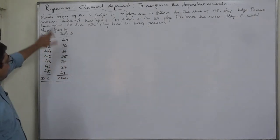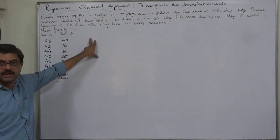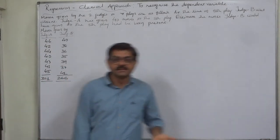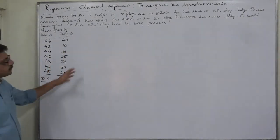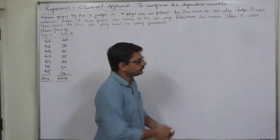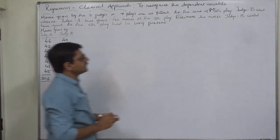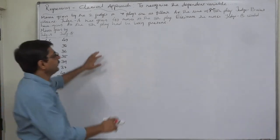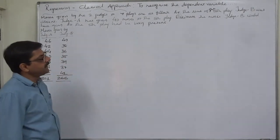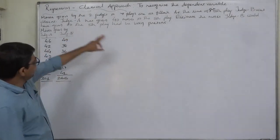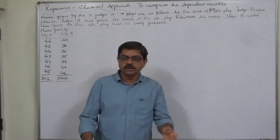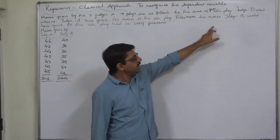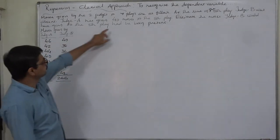In this case, it is given that marks given by two judges to seven plays are as follows. The information is about a contest of plays where two judges have already given marks to seven plays. At the time of the eighth play, Judge B was absent — for whatever reason. Judge A has given 40 marks to the eighth play.